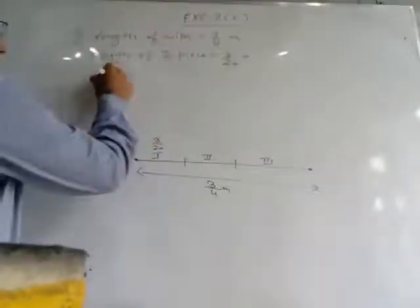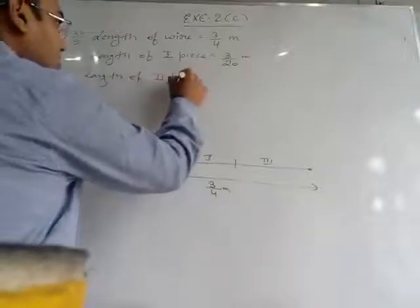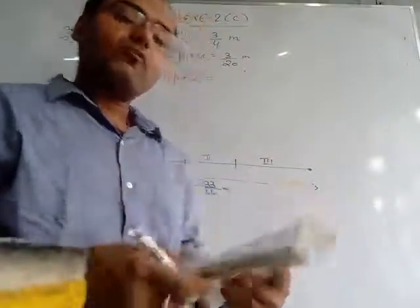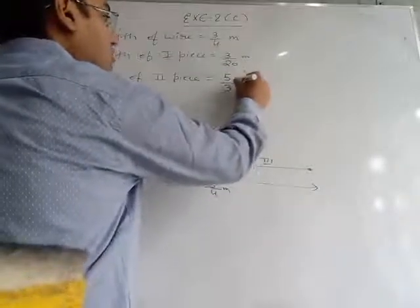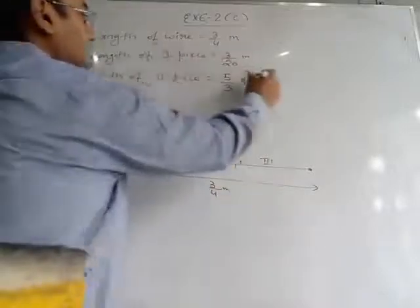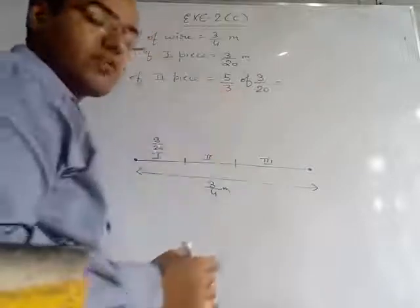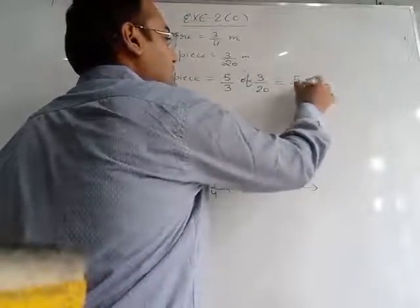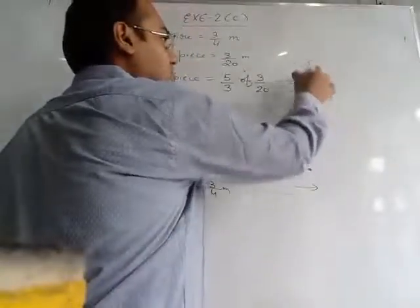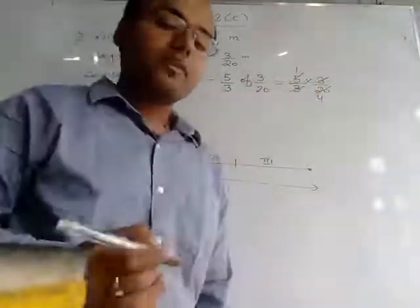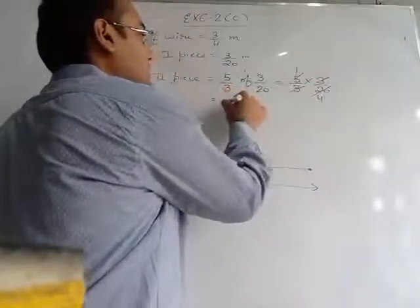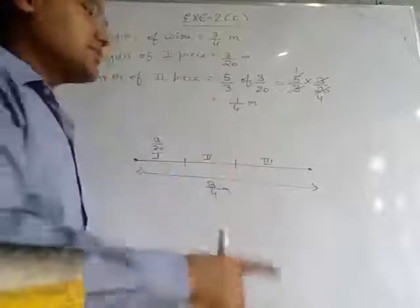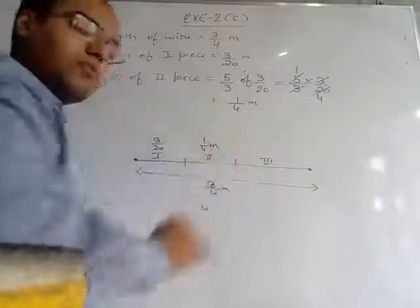We write: length of 2nd piece. The length is not given directly — a fraction is given: 5/3 of the 1st piece. So 5/3 of the 1st piece means 5/3 multiplied by 3/20. The 3s cancel, and 5 and 20 also cancel. Multiplying gives 1/4 metre. So the length of the 2nd piece is 1/4 metre. Unit is compulsory — this is in metres.